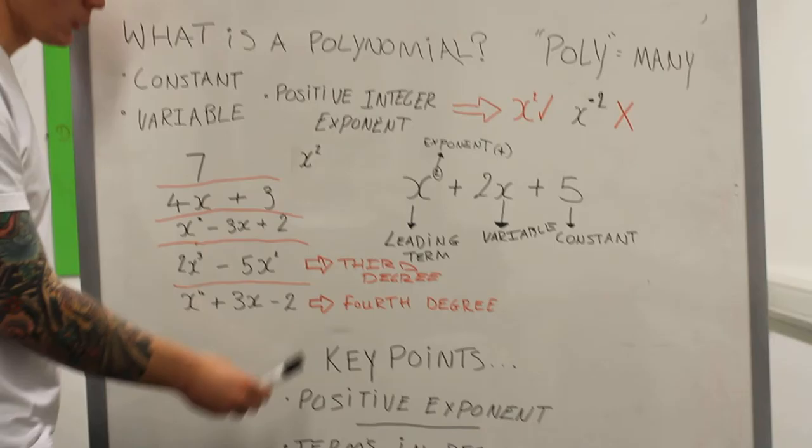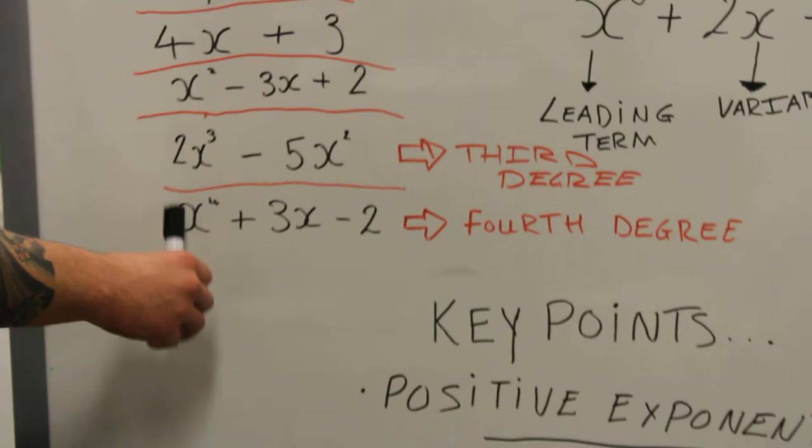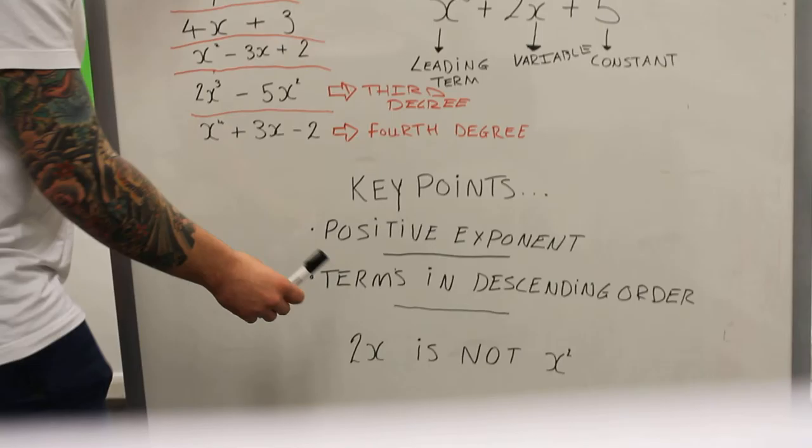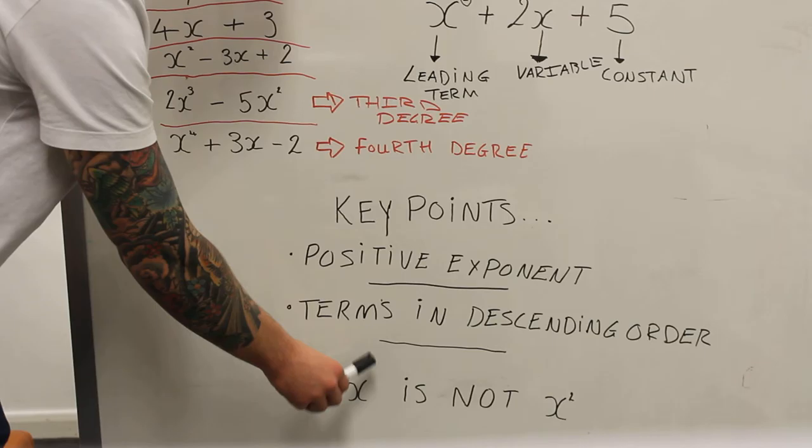Now you know what these are, I'll just go over some key points to remember. The positive exponent is an important thing to remember, because as I said earlier, if it's a negative value, then it's not a polynomial. The terms should be in descending order, which means that the largest exponent should be at the beginning.